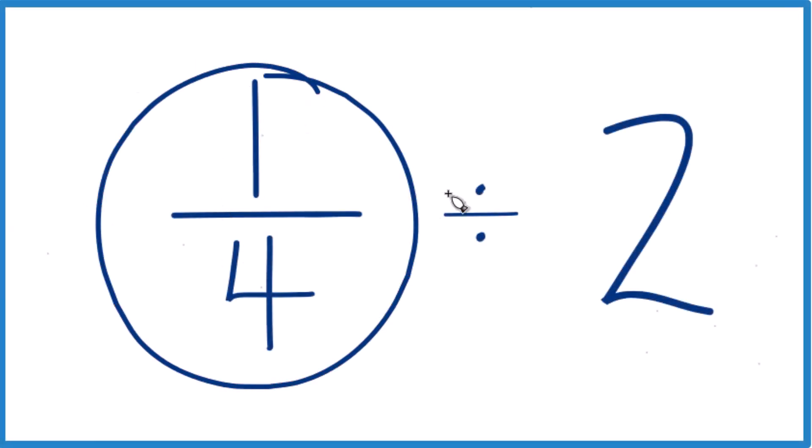Let's take a look at one-fourth divided by two. So if you look at this, one-fourth, that's a pretty small number. It's a fraction, it's less than one. We're trying to fit this whole number into it, so we should end up with a pretty small number, another fraction.